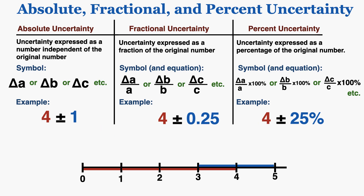You can see now why the equations work the way they do. The fractional uncertainty is the absolute uncertainty ΔA divided by the original number A — in this case, 1 over 4. The percent uncertainty is that fractional uncertainty multiplied by 100%. So 25% is 0.25 times 100%. These equations will always work to convert from one uncertainty to another.